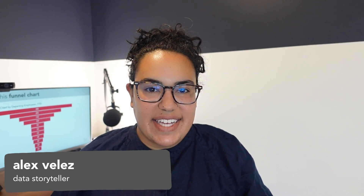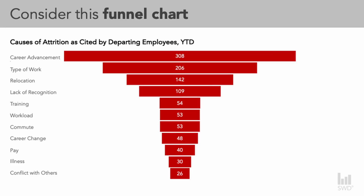Alex here. It's been a while since I've been on the channel, so I'm excited to be back. I thought I would kick off my return with a recent graph makeover. This makeover is memorable for me because it leverages a chart type that I typically don't use very often. The example hails from the people analytics space — specifically, it is a funnel chart that shows reasons employees decided to leave an organization for a given time period.